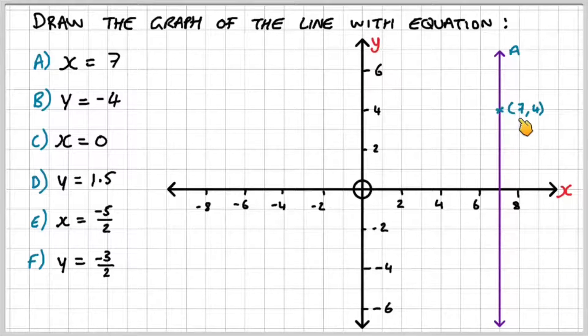So if I take a random point here, 7, 4, you can see that the x-coordinate is 7. If I take another random point on the line here, again, you can see it's 7, minus 3. So the x-value is always constant, regardless of whatever the y-value is. So this is classified as x equals 7.